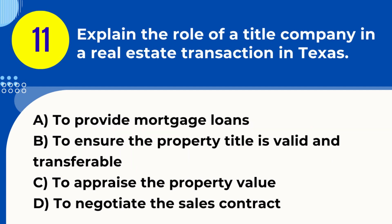Question 11. Explain the role of a title company in a real estate transaction in Texas. A. To provide mortgage loans. B. To ensure the property title is valid and transferable. C. To appraise the property value. D. To negotiate the sales contract. Answer: B. To ensure the property title is valid and transferable. Explanation: A title company in Texas plays a crucial role in ensuring that the property title is clear, valid, and free from liens or disputes before the transaction.